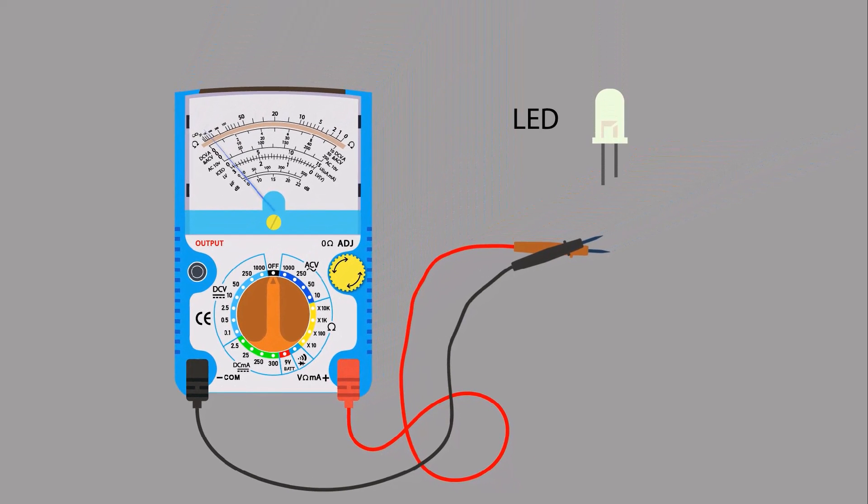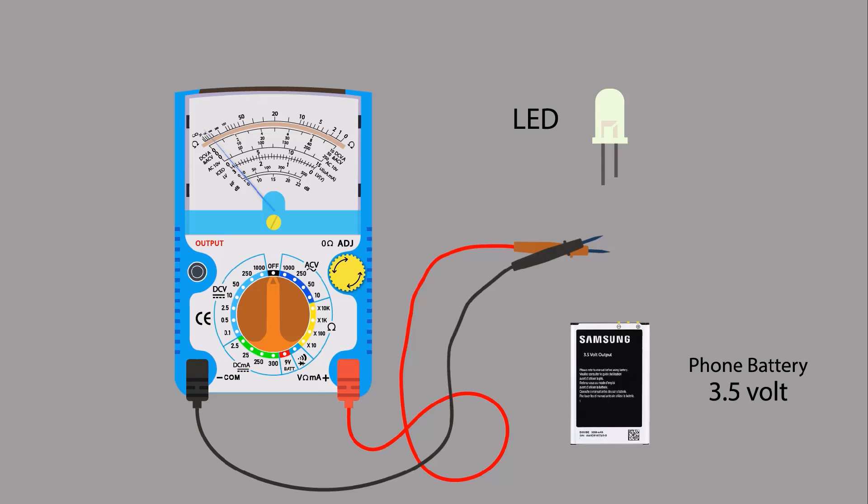Take a LED and use it as a load. Longer terminal is positive and shorter terminal is negative. Take a phone battery and use it as a power source.